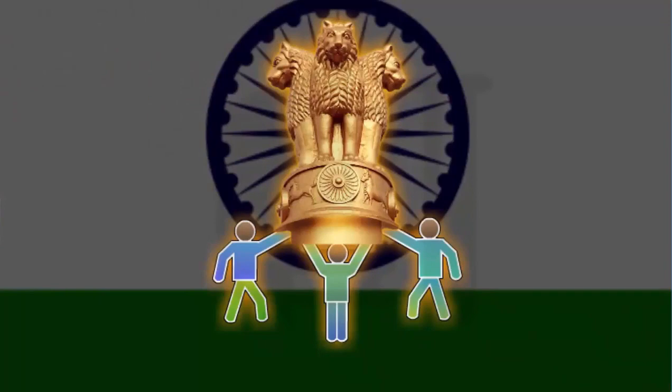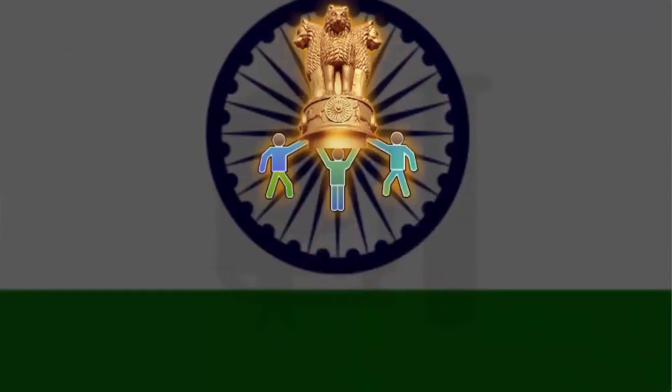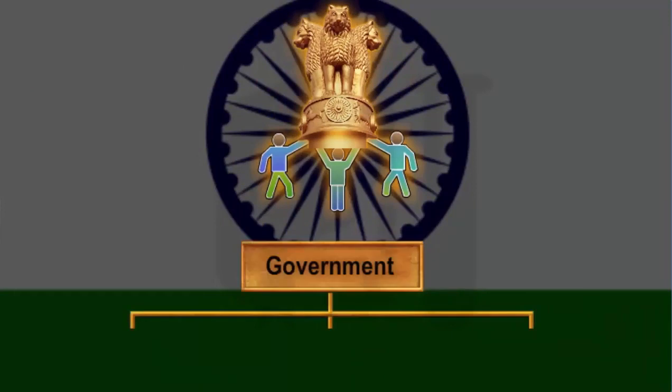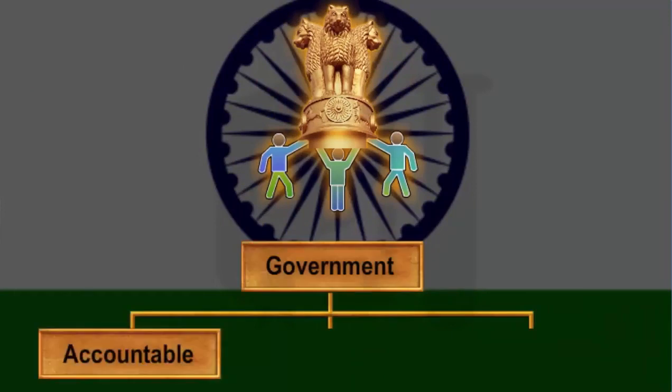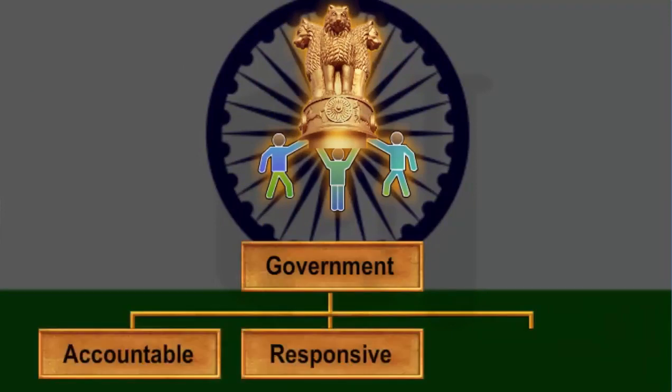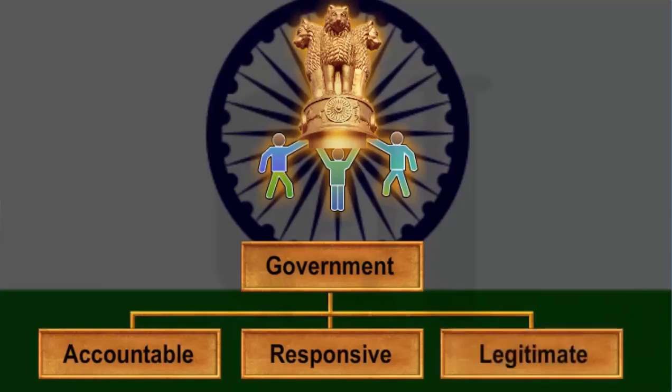Keeping all these factors in mind, we can say that the expected political outcome of democracy is an accountable, responsive and legitimate government. Let's see how we can measure each factor.